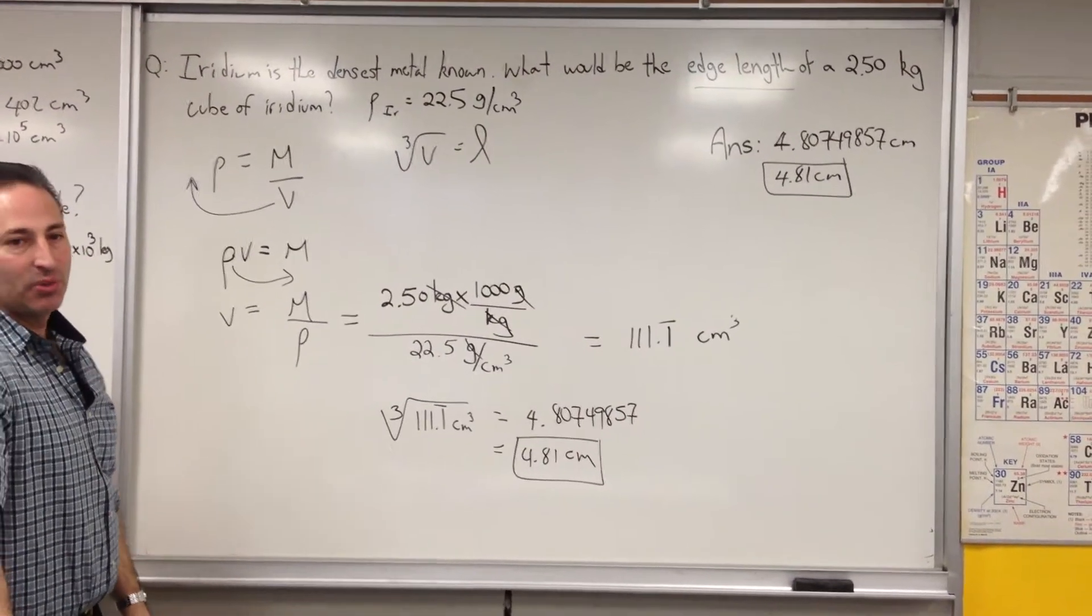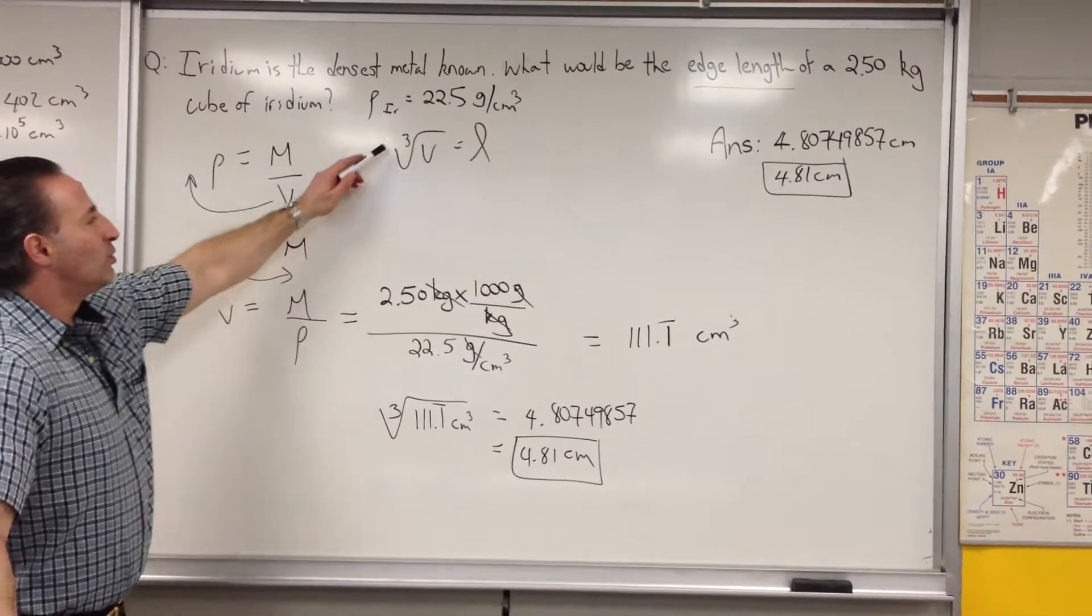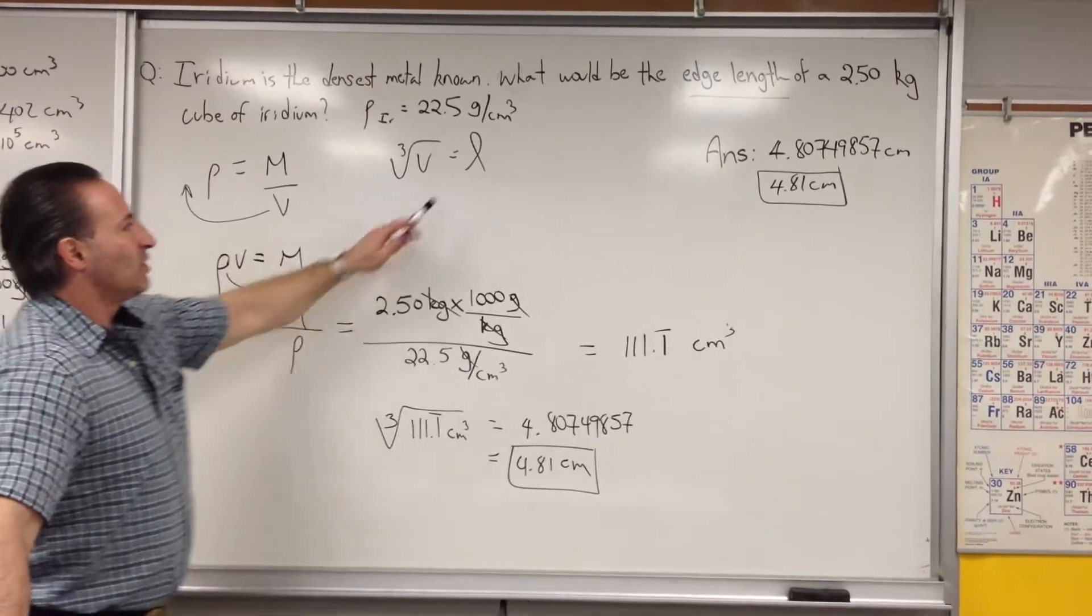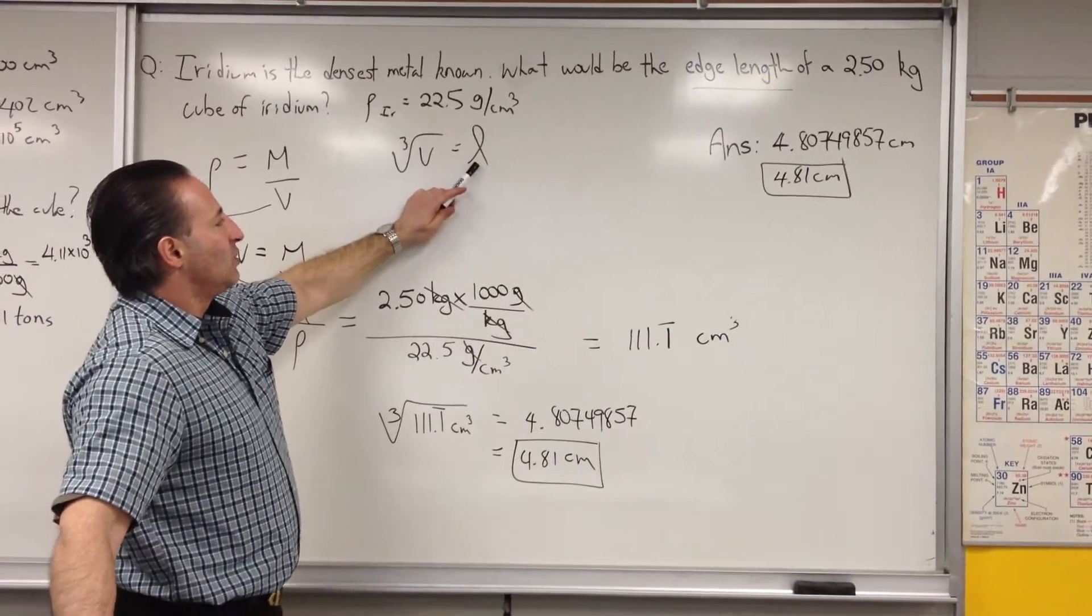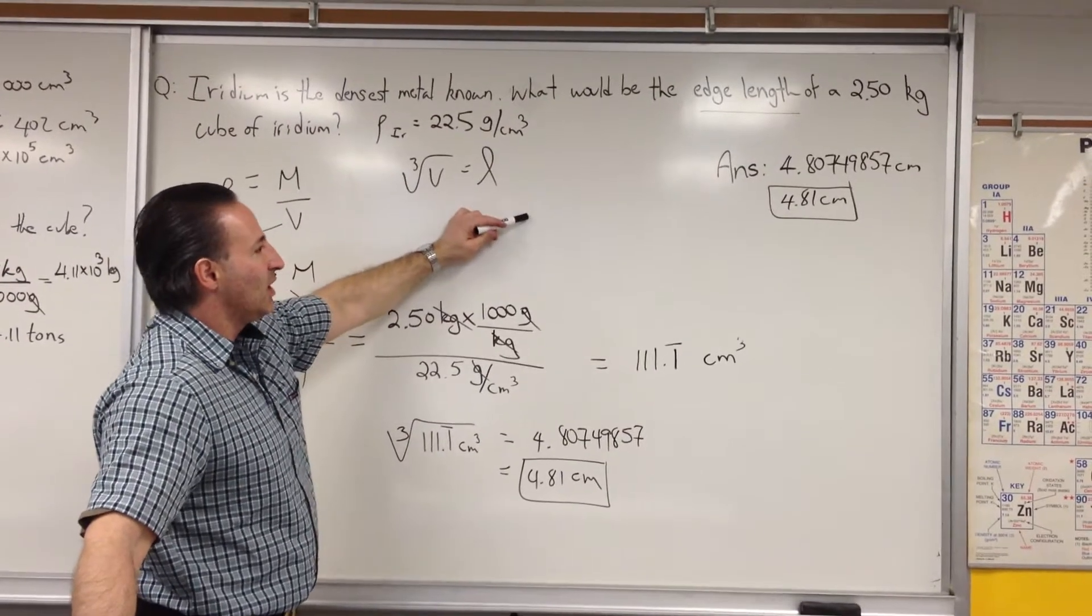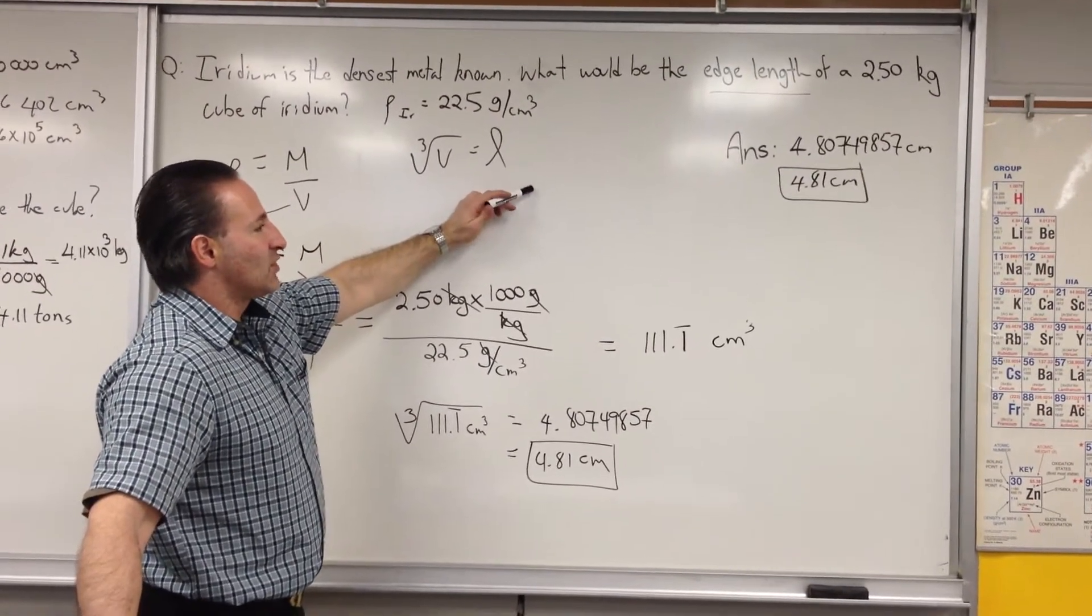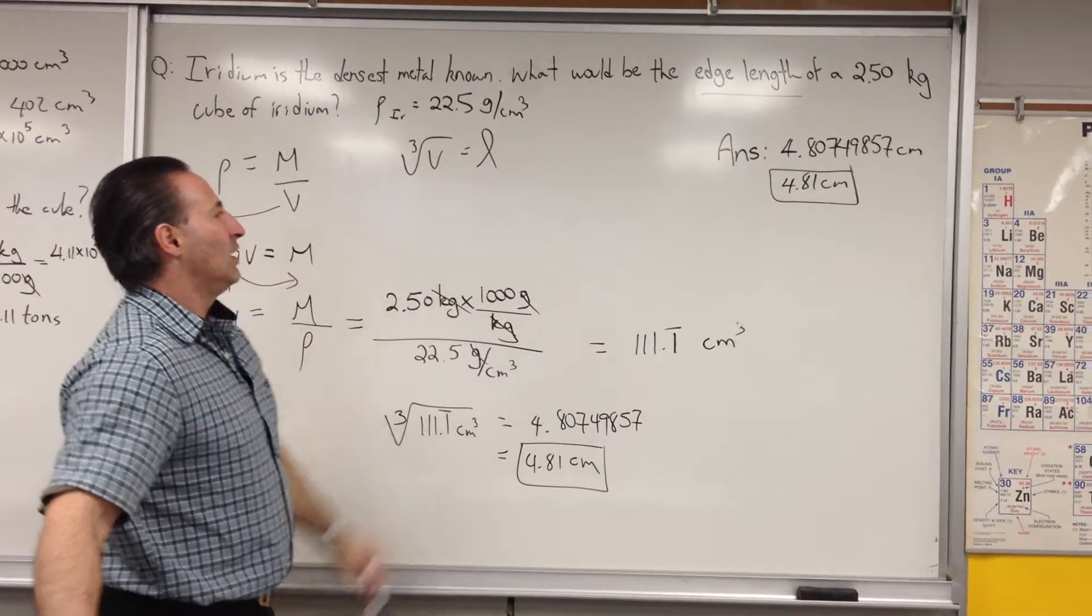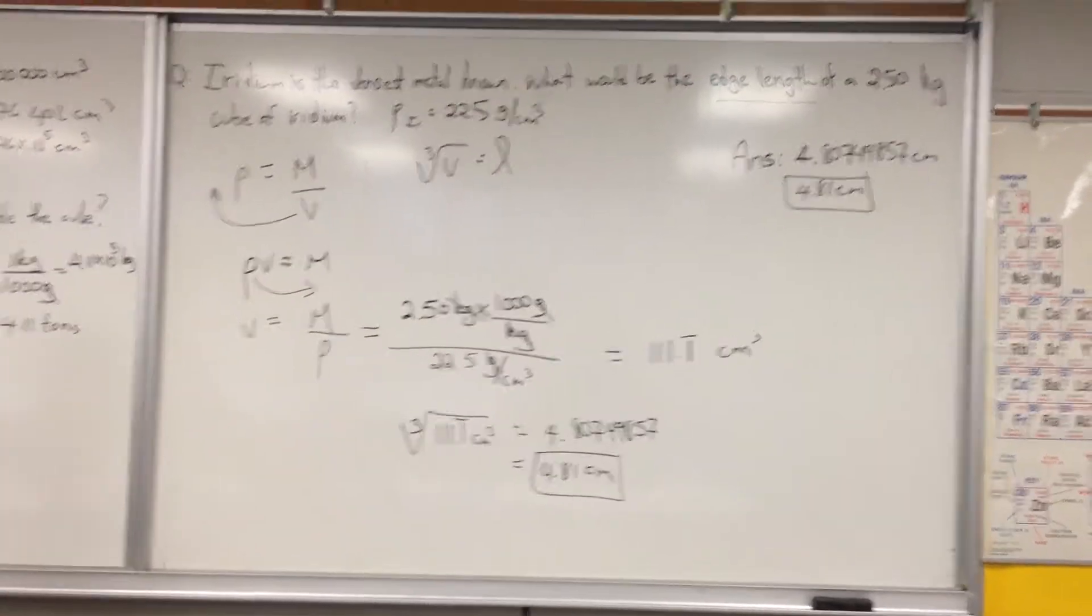Once we find the volume of the cube, we can use the cube root of the volume to find its length. Why can we use this formula? Because a cube has a volume made up of length times width times height. But in a cube, all the edges are at the same length. So we can use L to determine its edge length.